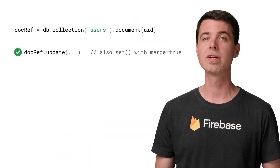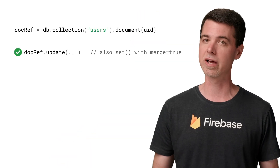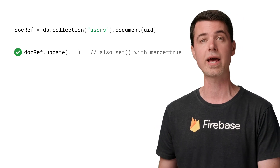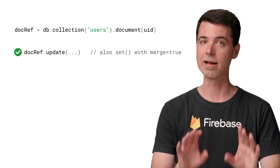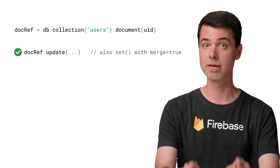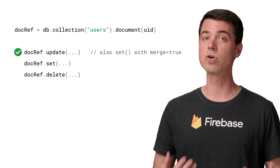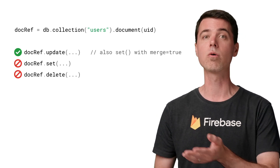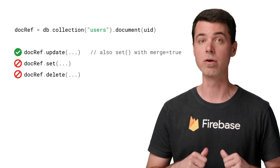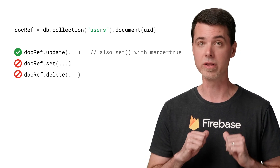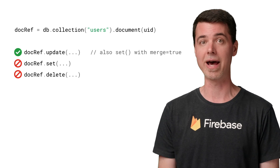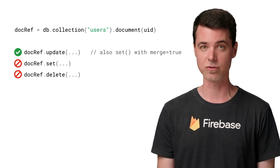Just like in the previous videos, let's say I have a collection called users, and it contains documents for each authenticated user in my app. I'd like users to be able to update the contents of this document. But what I really don't want them to do is create or delete that document. That's something I want to do on my own only when the user account is created or deleted. And I'll manage that on the back end implemented with a Cloud Functions trigger.